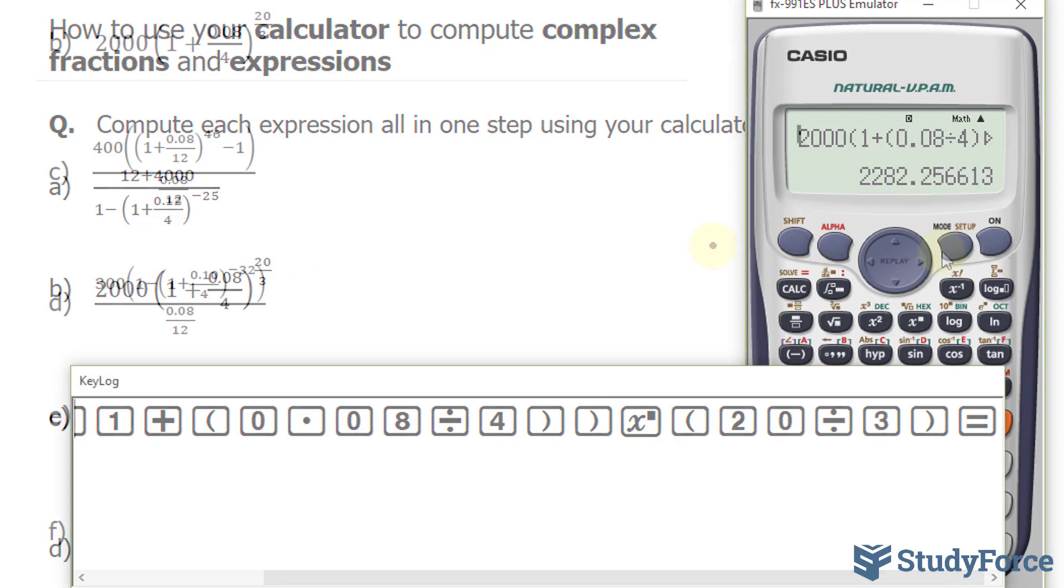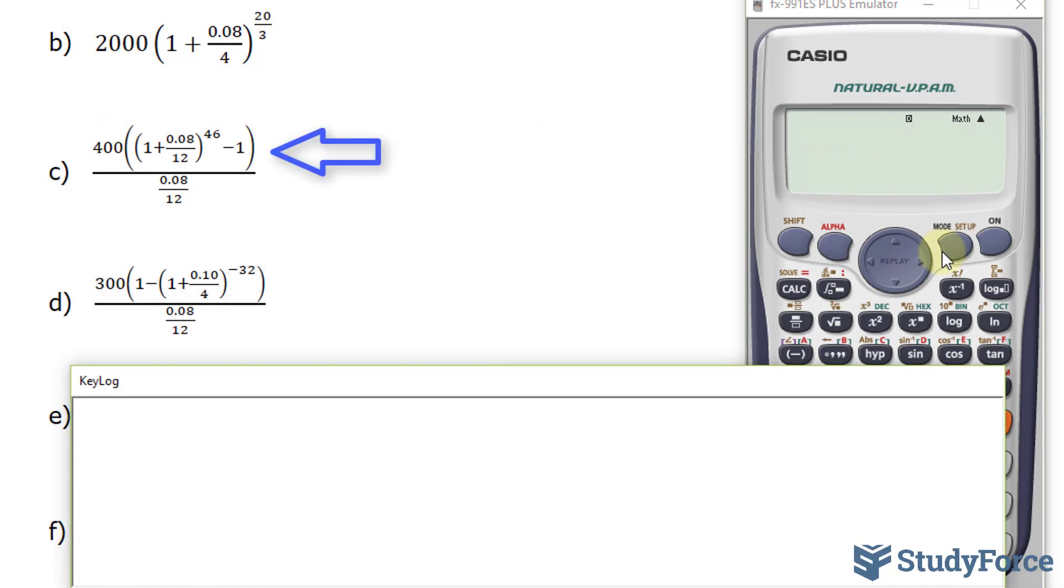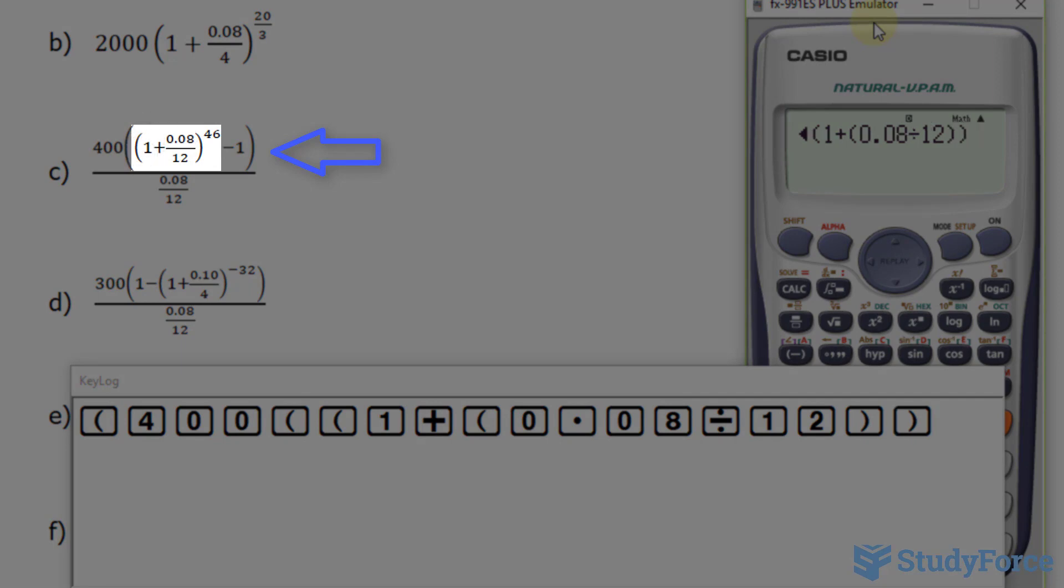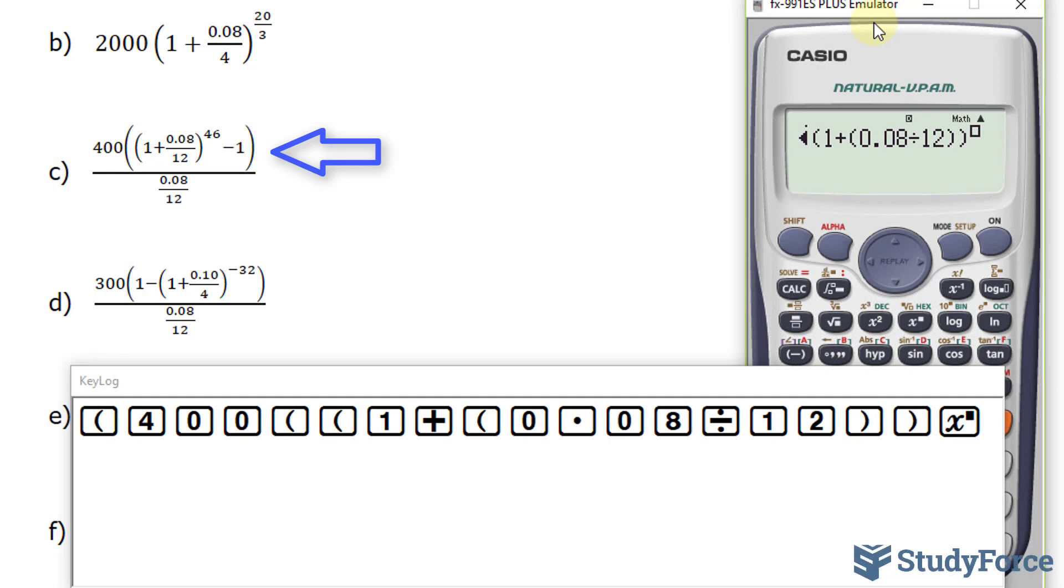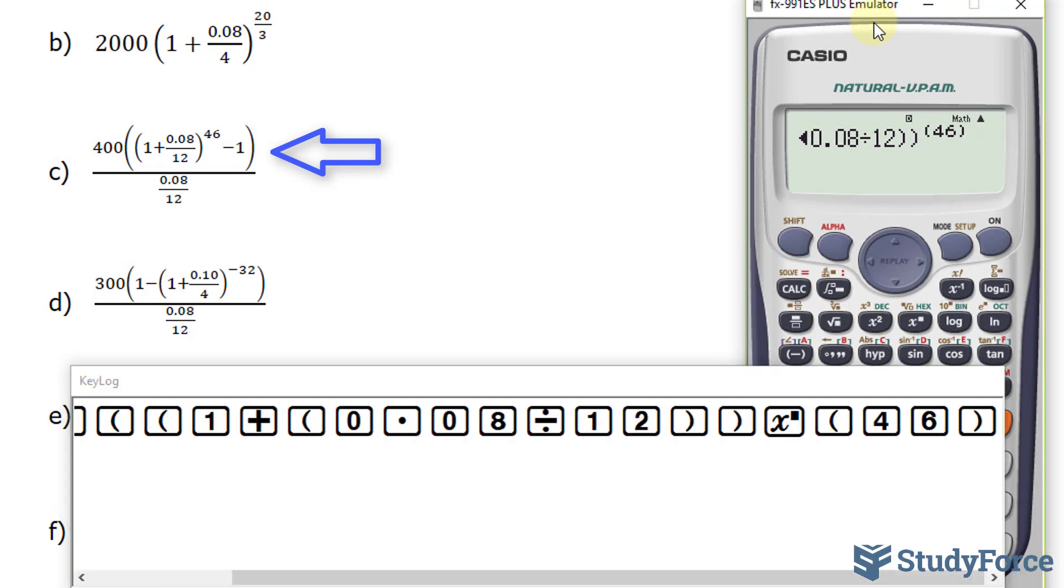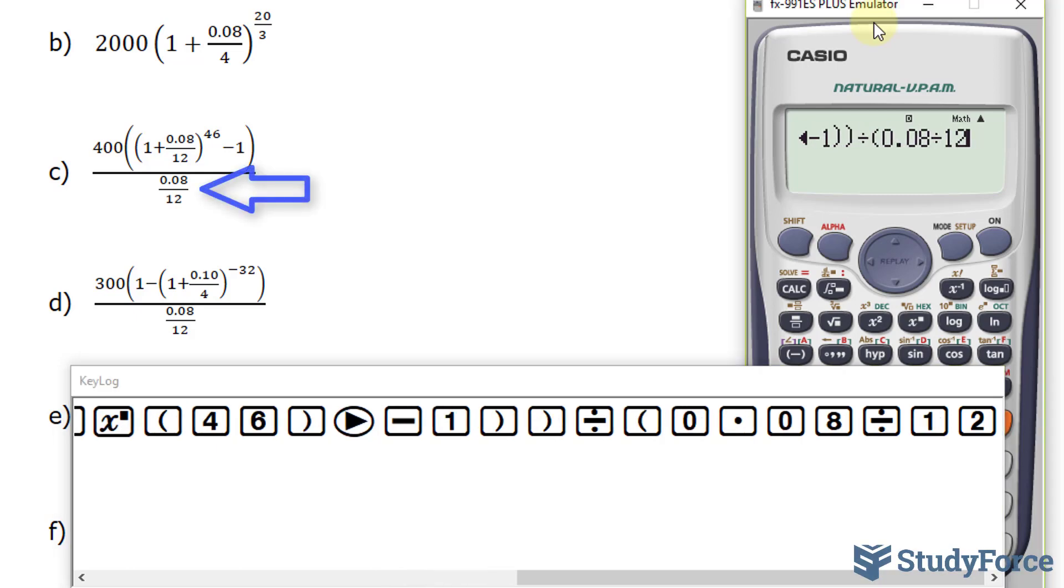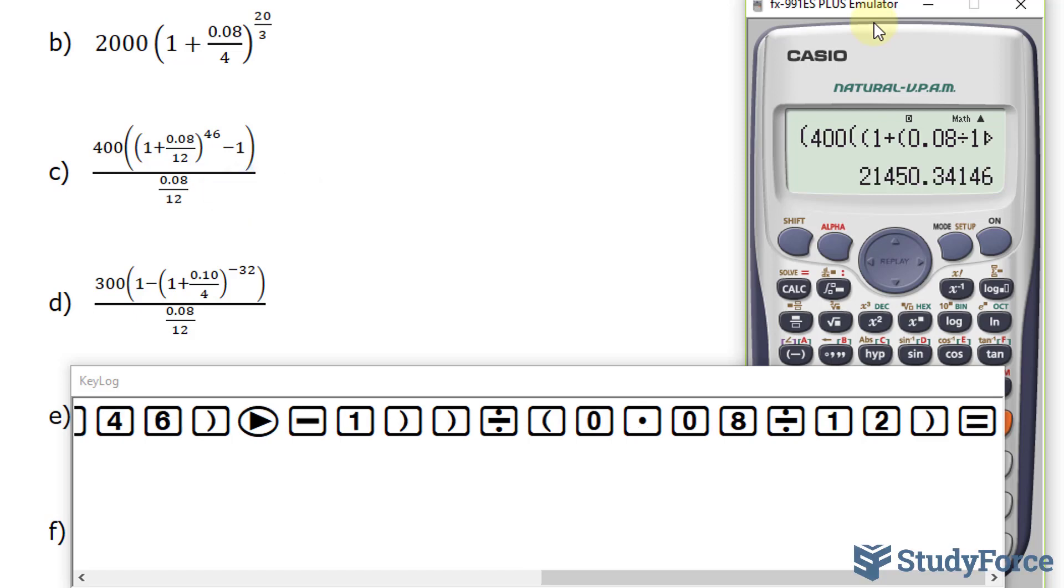Now let's move on to question C. Once again, in question C, we have a complex fraction and we have a numerator and a denominator. So I'm going to place the whole numerator in parentheses: 400 open bracket, open bracket, 1 plus. There's a fraction, which I'm going to place in parentheses: 0.08 divided by 12, close. And you want to raise this whole thing to the power of 46. I mentioned earlier that you place exponents in parentheses, so I'll do that again: minus 1. And I'm going to close the bracket that I opened and then the bracket that I opened originally for the numerator. Divided by open bracket 0.08 divided by 12, close bracket. And we end up with 21,450.34.